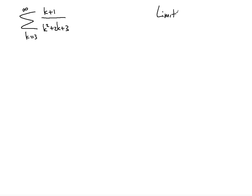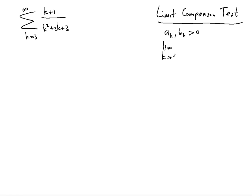The limit comparison test basically compares two sequences a_k and b_k which are both greater than zero. What it says is that you're going to take the limit as k approaches infinity of the quotient — a_k divided by b_k. So a_k will be the primary given fraction, and b_k is going to be something that you determine, and the limit value will be greater than zero.